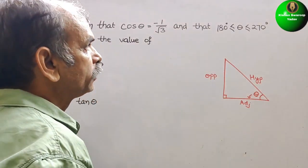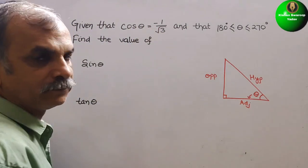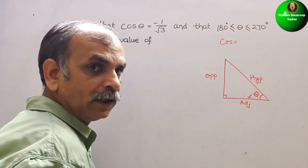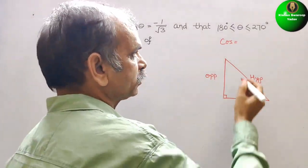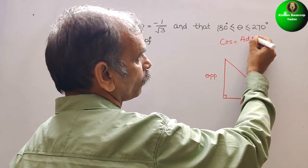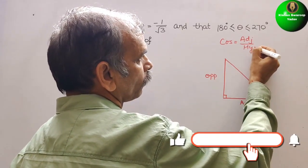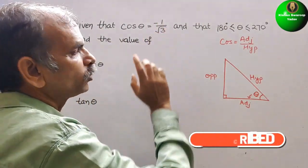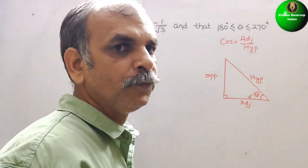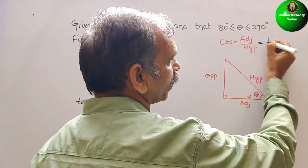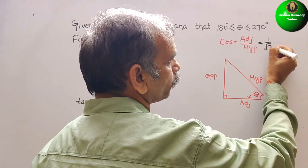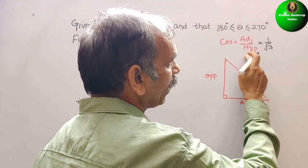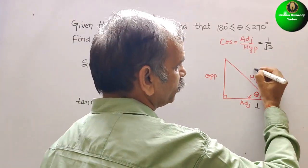Now, here what they have given? See this cos theta. They have given you cos theta. So cos is equal to adjacent by hypotenuse. And the value they have given is 1 by root 3. First you have to see only the value, so this is equal to 1 by root 3. Therefore we can say adjacent is 1 and hypotenuse is root 3.